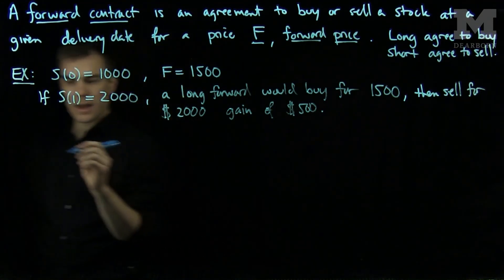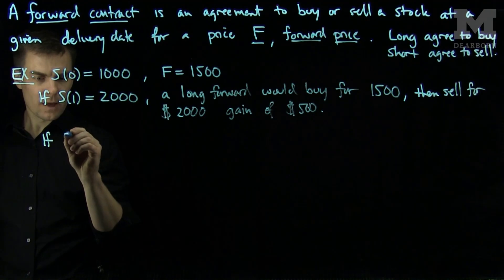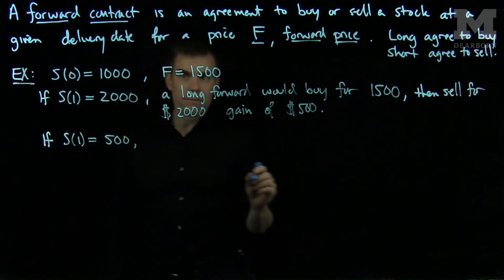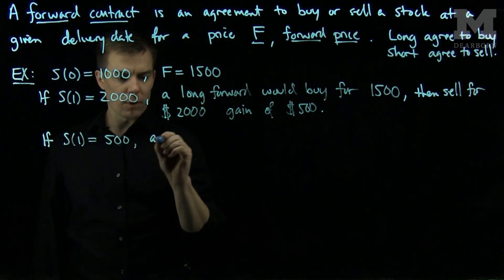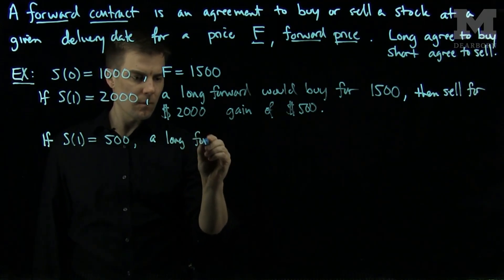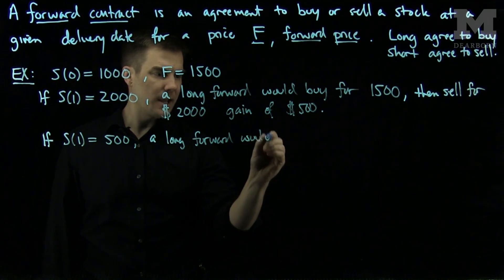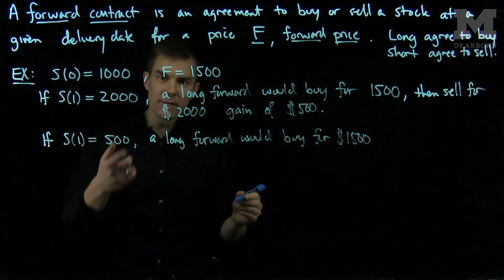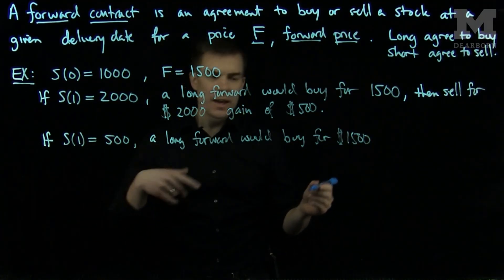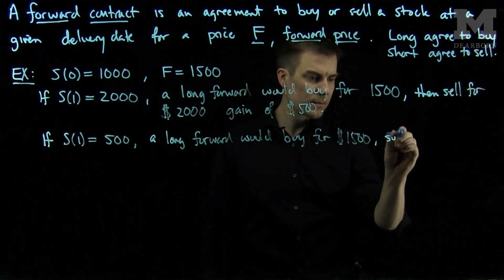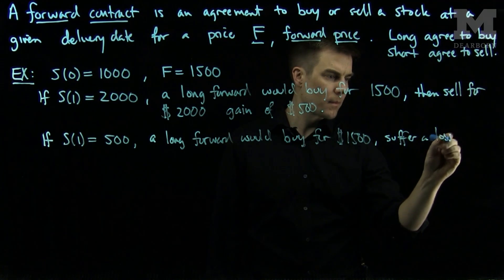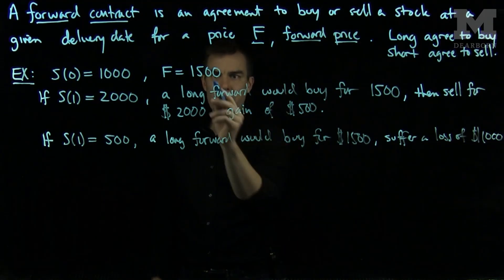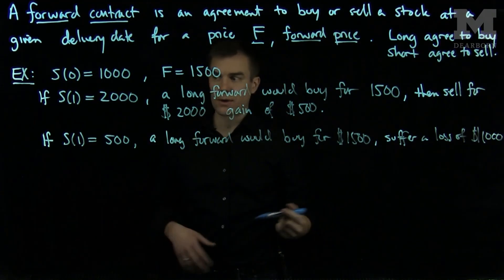Conversely, if S(1) was equal to, say, $500, then a long forward would actually lose money. A long forward would be obligated to buy for $1,500 even though the current market price is $500, and they would suffer a loss of $1,000. Since they are paying $1,500 and it is only worth $500, they are losing $1,000 on the transaction.